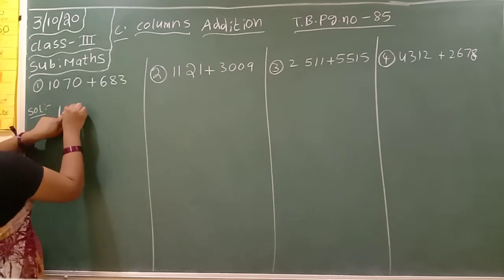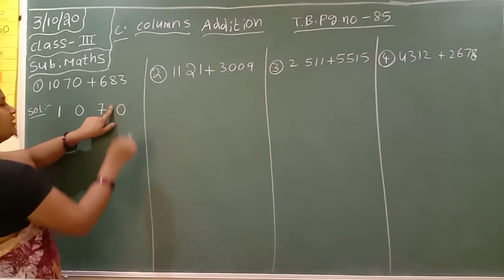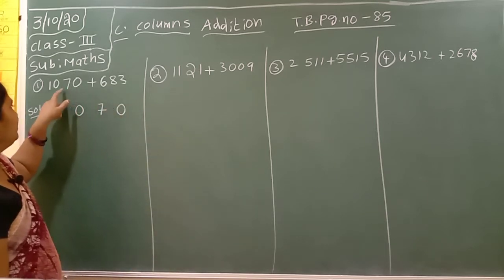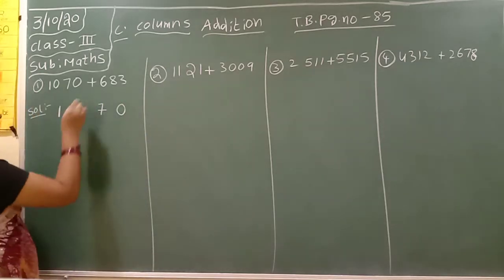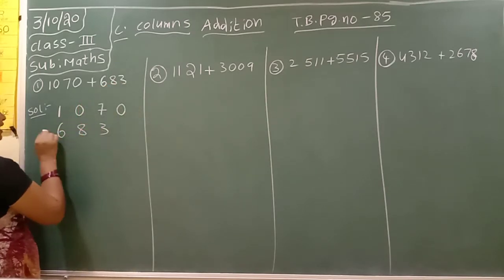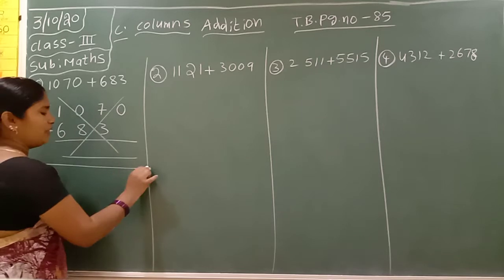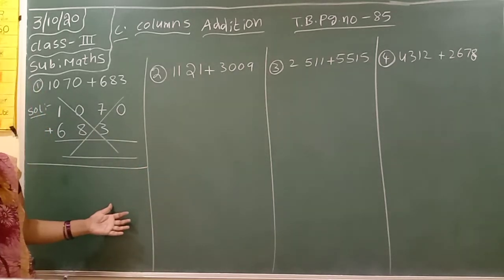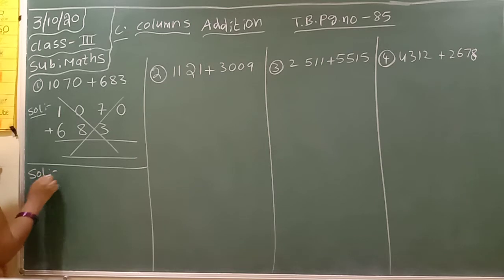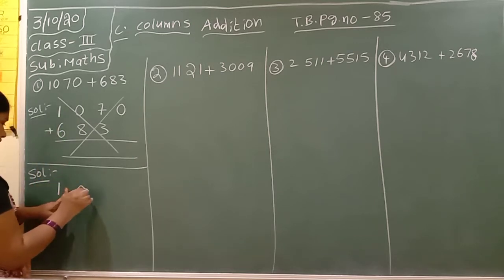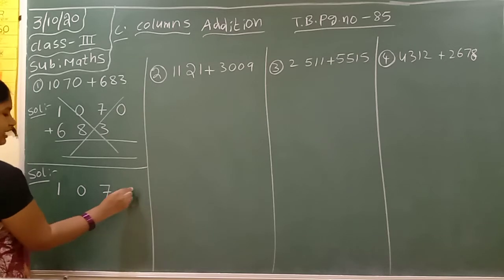One, after leave one finger gap, then zero, again finger gap, next number seven, again finger gap, then next number zero. Here they are given a four digit number and here they are given a three digit number. Some write 683 starting directly — that is wrong. Why? Because we have to start the arrangement from one place to next place value. Write down the given number: one, finger gap, zero, finger gap, seven, finger gap, three. The given number is over.